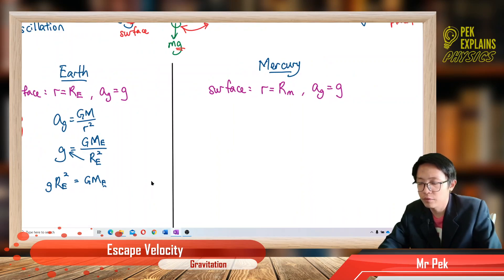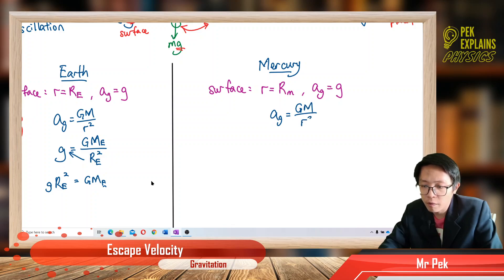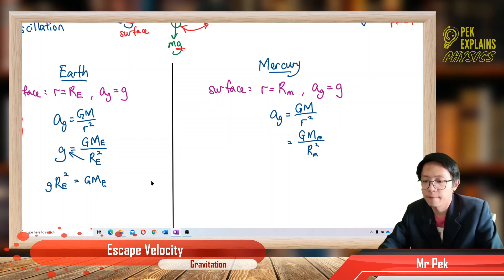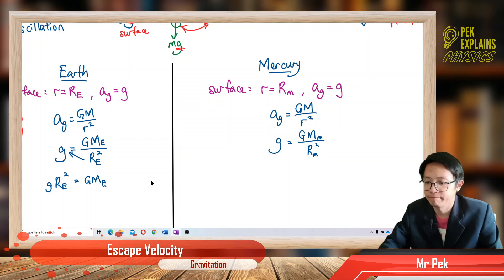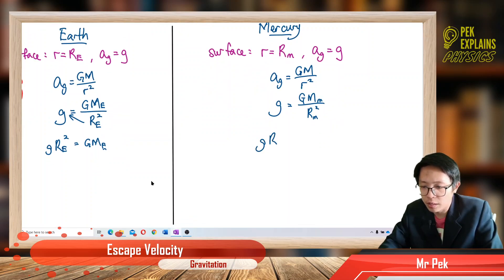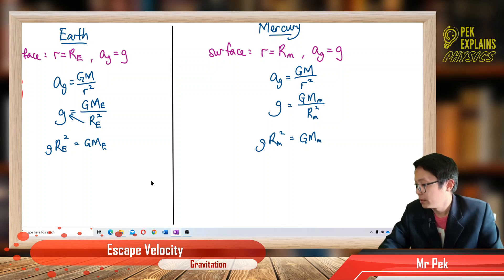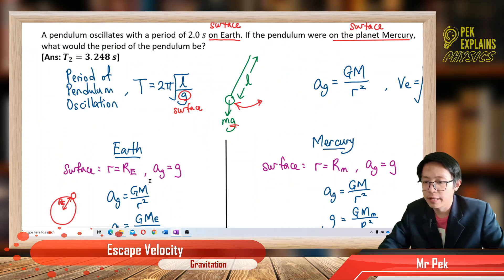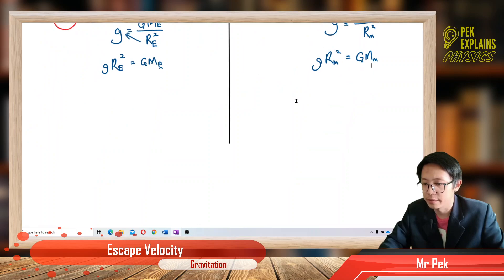For Mercury, apply the same formula: g = GM / R². This is for Mercury, so use the mass of Mercury and the radius of Mercury. So GM_Mercury = g_Mercury · R_Mercury². We can now apply the escape velocity formula for each planet.